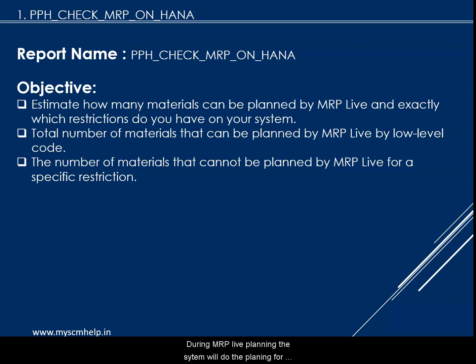During MRP planning when you use MRP live, the system will do the planning for MRP live and also for the classic MRP. When you go and check some materials, you will see that certain ones are not planned in MRP live, which raises questions about why they were not planned. This report will help you identify those materials beforehand, before you even run MRP live.